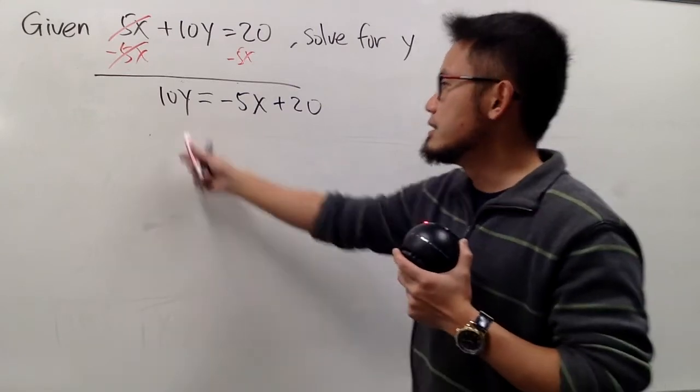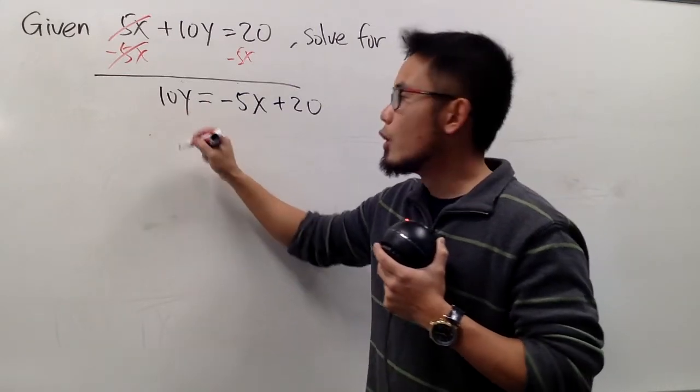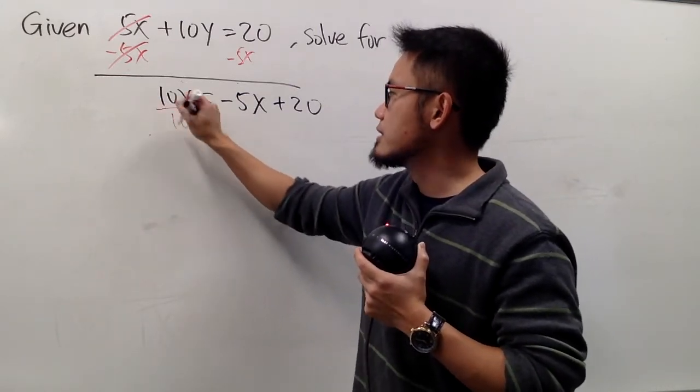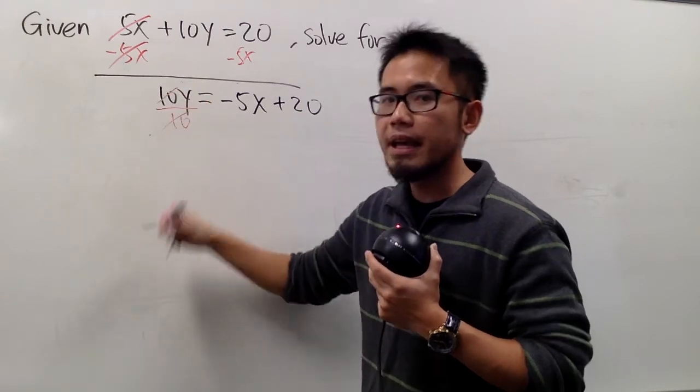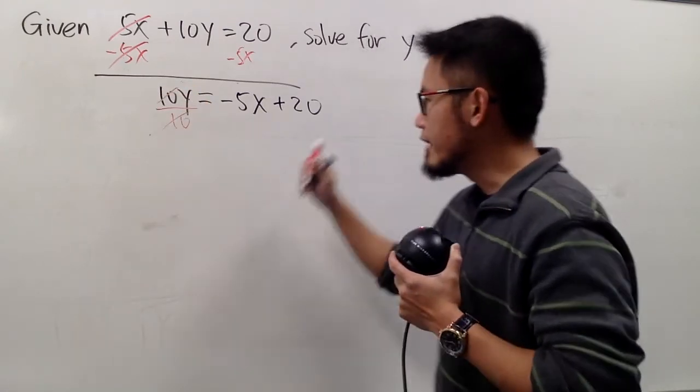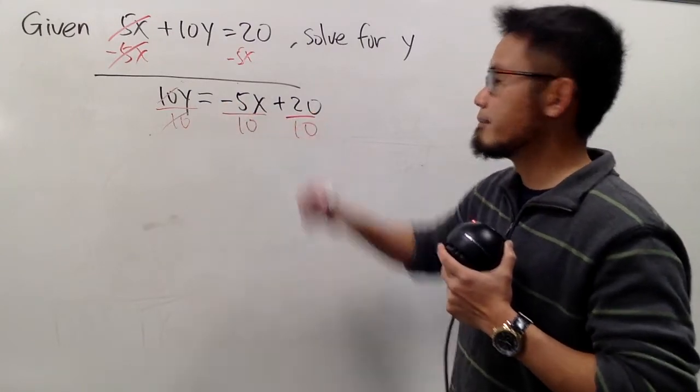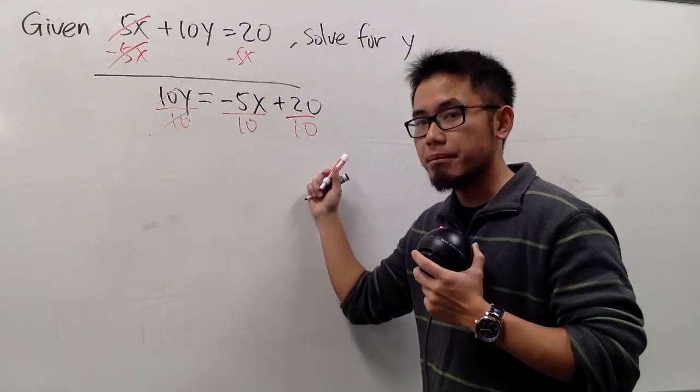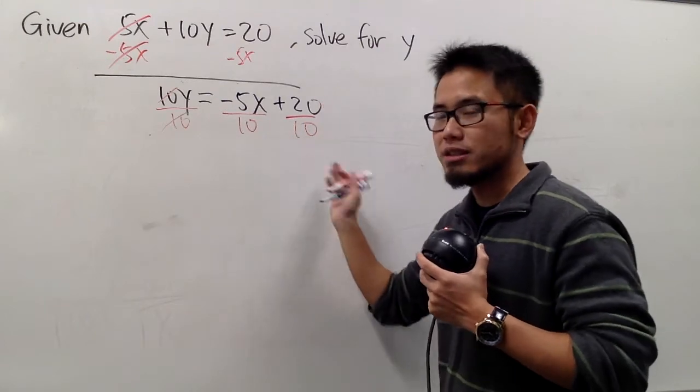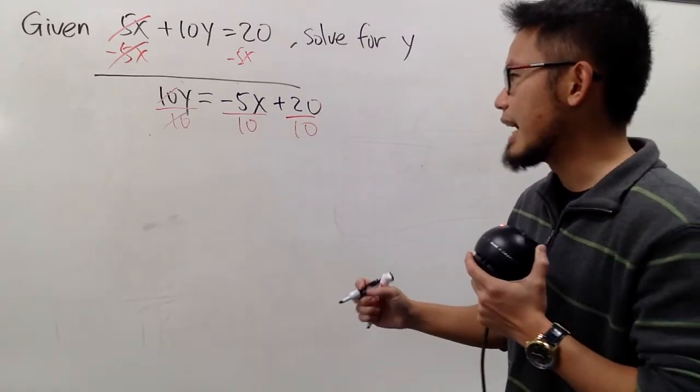And then lastly, this is 10 times y. We will have to divide this by 10, so that this and that will be cancelled, and the y will be by itself. And now, on the right-hand side, be sure you just divide everything by 10. And it's easier to do it this way, so you can cancel all the fractions later on, reduce the fractions and things like that.